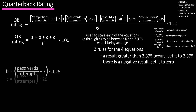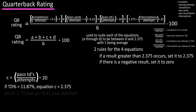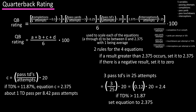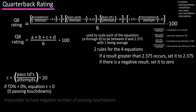To reach 2.375 in equation C, a quarterback needs a touchdown percentage of 11.87%, which is about one passing touchdown every 8.42 pass attempts. If a quarterback threw three touchdowns on 25 attempts, equation C equals 2.4, so you'd plug in 2.375 for the main equation. Zero passing touchdowns results in a zero for equation C, and it's impossible to get a negative result because you can't throw a negative number of touchdown passes.